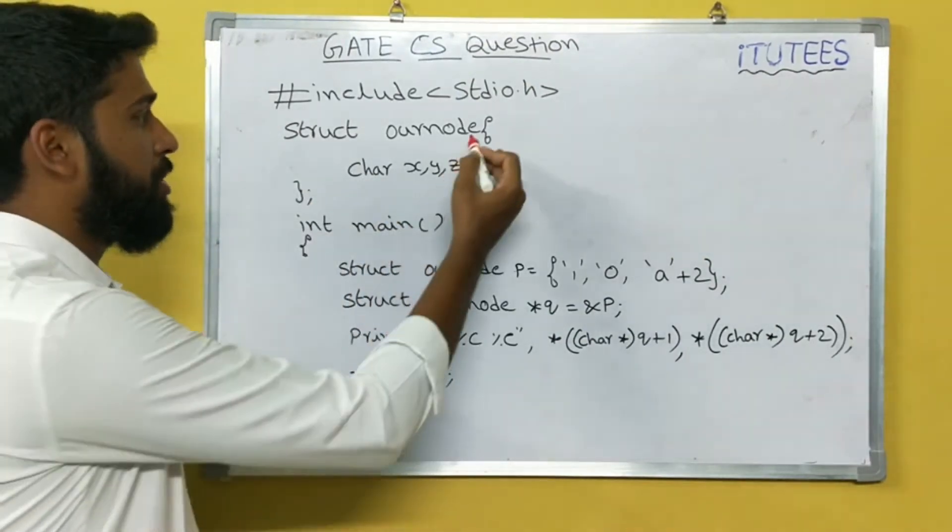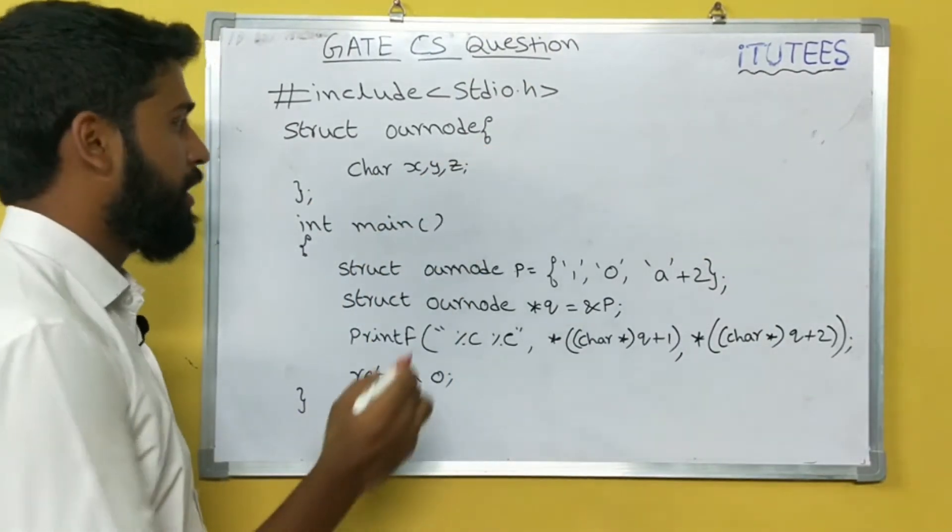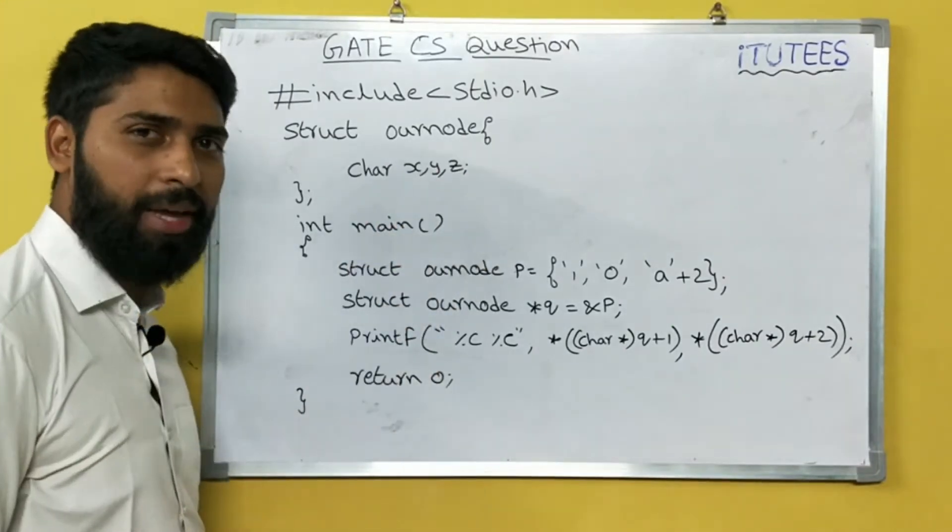So this is the structure. The structure name is ournode. It consists of three variables: x, y, z, all are character variables.